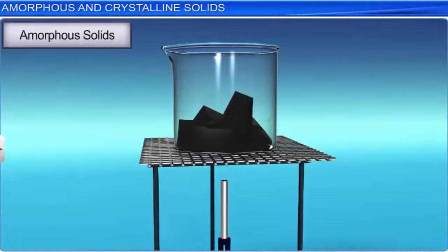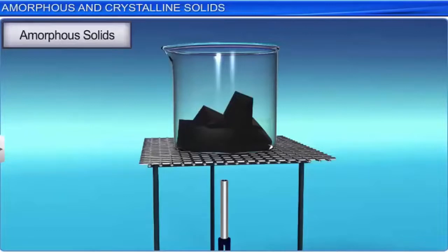The flow of these solids is clearly observed in glass panes fixed to the windows or doors of old buildings, which are found to be slightly thicker at the bottom than at the top. The best example of a crystalline solid is quartz, and of an amorphous solid is quartz glass. From these two images, you can clearly observe that both solids have similar arrangements. However, in quartz glass, there is short range order.